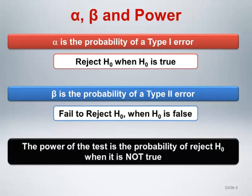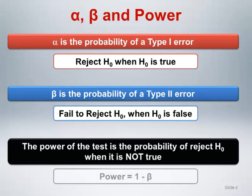The power of the test is the probability of rejecting H0 when it is not true, which is exactly what you want to do. And power is equal to 1 minus beta.